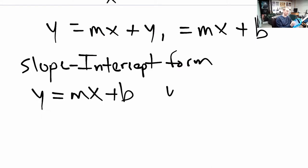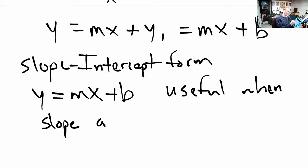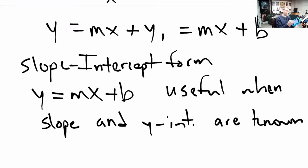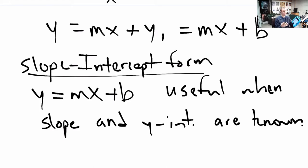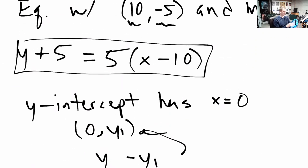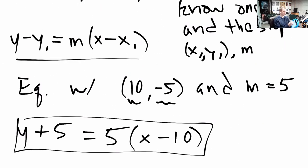The slope-intercept form, y equals mx plus b, is very useful when the slope and a particular point — the y-intercept — are known. In point-slope form any point and the slope are known; in slope-intercept form, we know the slope and we know the y-intercept, a specific point where x1 is 0.